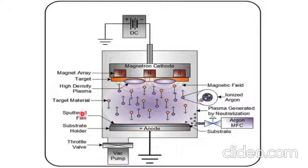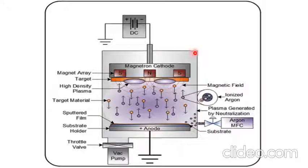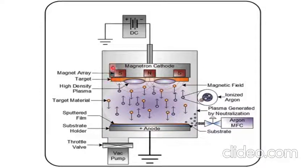The magnetron sputtering instrument has a reaction chamber. This is a schematic representation of the reaction chamber of the magnetron sputtering instrument. The magnetron sputtering instrument consists of a cathode, and the material which we want to deposit or sputter is known as the target or source material, which is placed on the surface of this cathode.